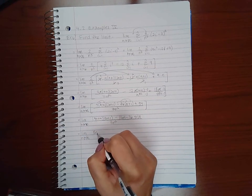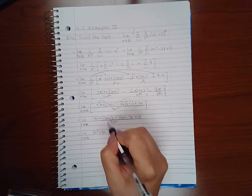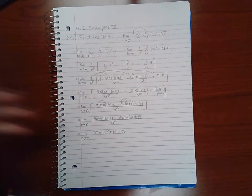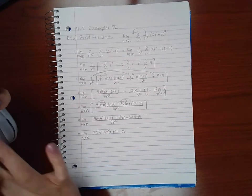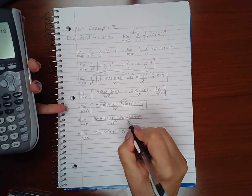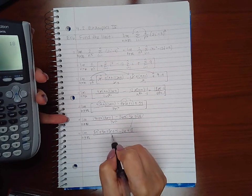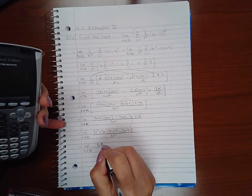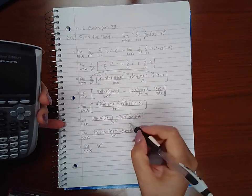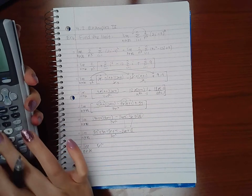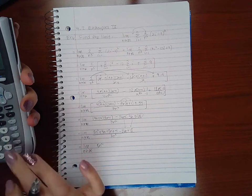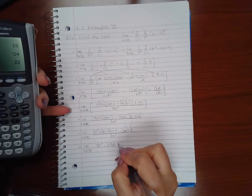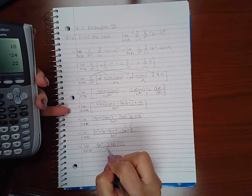Then if I continue to distribute this, we'll get 8n squared plus 4n plus 8n plus 4, negative 36n, negative 36 plus 54 is going to be a positive 18. And then here we have 8n squared, we have 4n plus 8n minus 36n, so I have negative 24n's total, and then 4 plus 18 is going to give me a positive 22 over 3n squared.